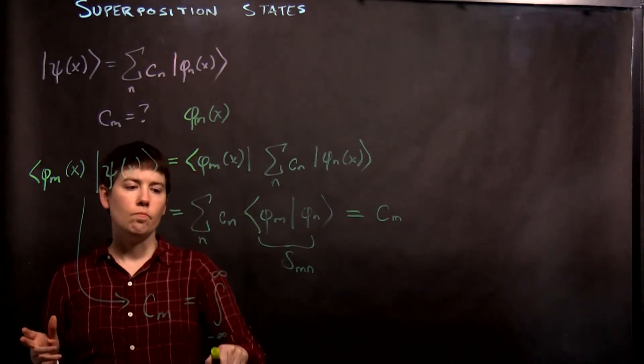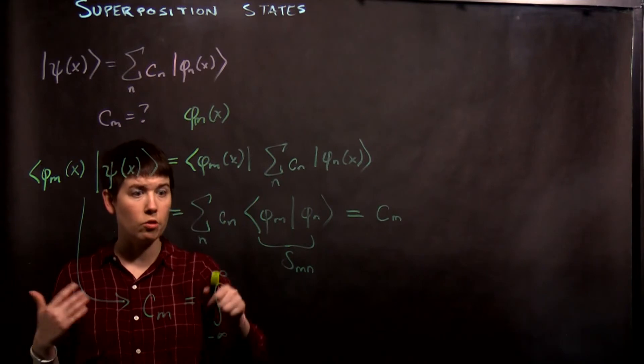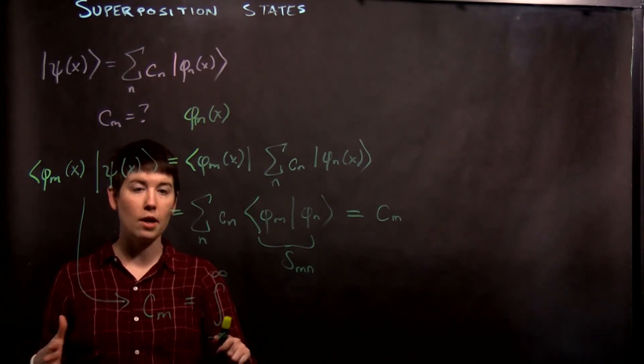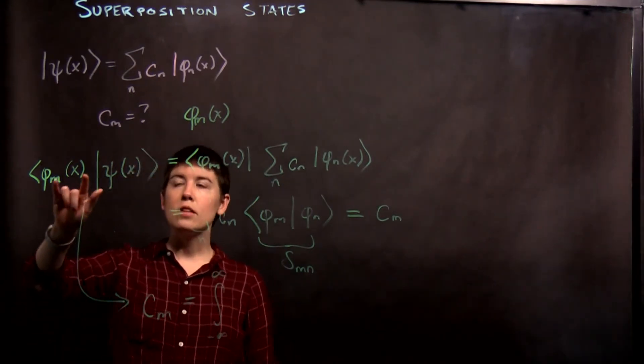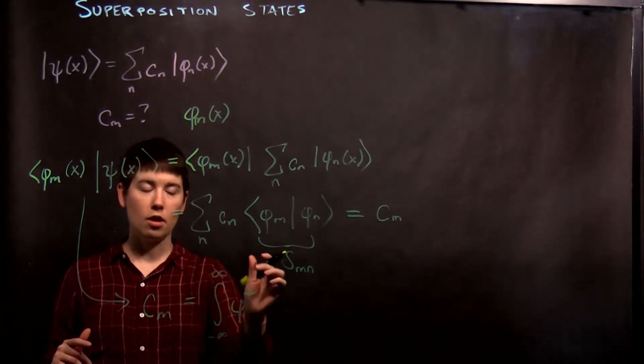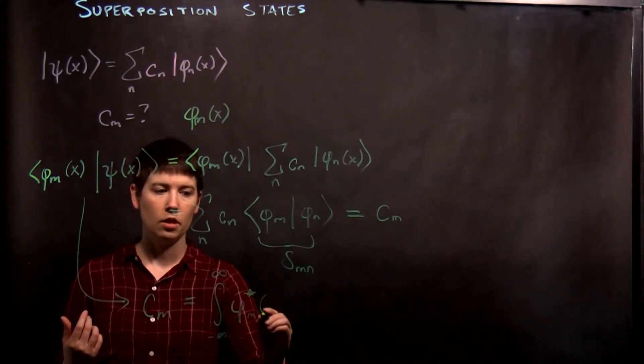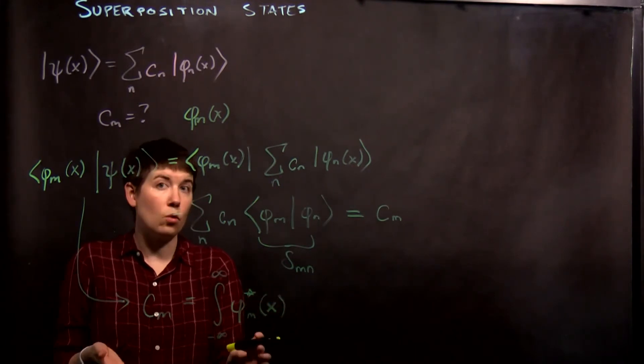So for an infinite well, you could turn this then into a limit from 0 to L because your wave function is 0 outside, but I'll write this in the general form. And so since this is the bra, we would need to write this as our phi star. So your energy eigenstate complex conjugated.